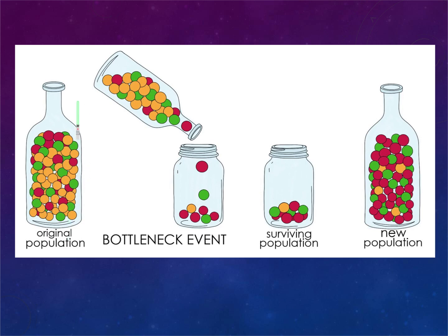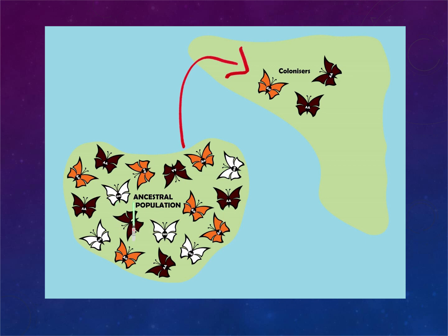A picture of the bottleneck effect shows an original population with green, red, and orange circles — orange being most dominant. A natural disaster like a flood, earthquake, or meteor strike drastically reduces the population by chance. More reds happen to survive, so the population shifts to more red and far less orange — totally random, not survival-based. The founder effect shows butterflies in orange, white, and brown; by chance, only brown and orange move to a new area, so the new population would have very few white butterflies — again nothing to do with the environment.